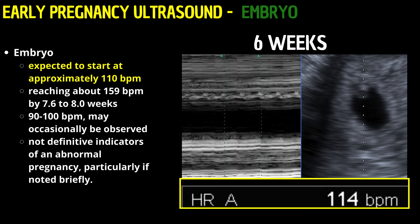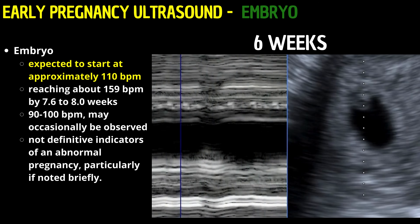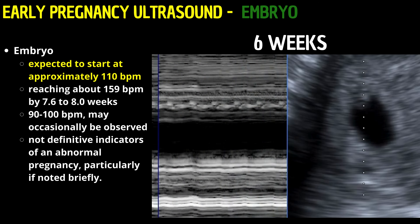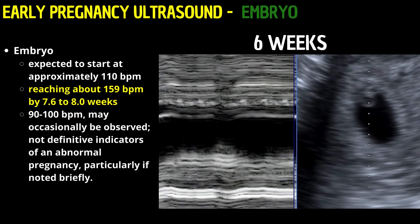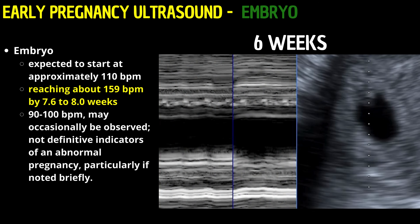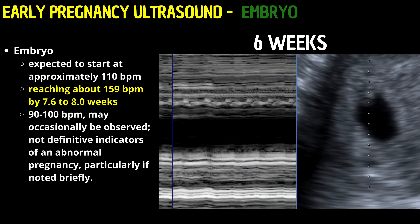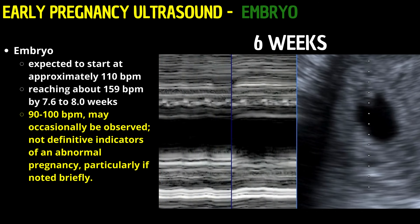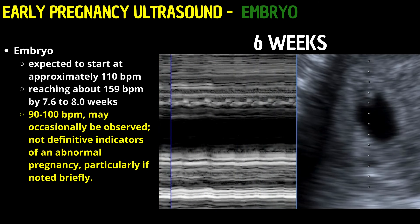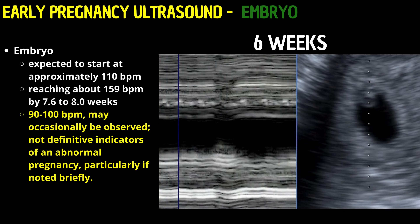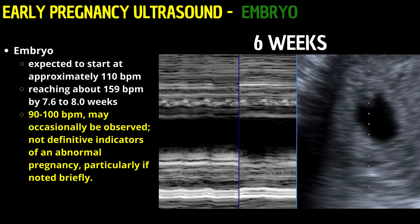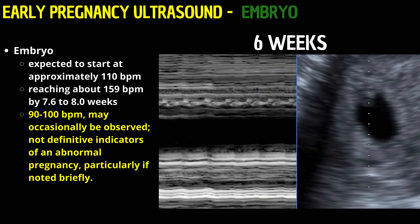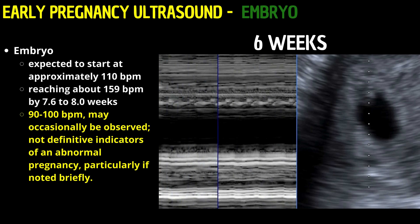This threshold underscores the importance of early cardiac activity as a prognostic indicator. A fetal heart rate is expected to start at approximately 110 BPM by 6.2 weeks, indicating a healthy progressing pregnancy, and is anticipated to increase progressively, reaching about 159 BPM by 7.6 to 8.0 weeks. Slightly lower fetal heart rates, such as 90 to 100 BPM, may occasionally be observed early in gestation. While these rates can be concerning and require close observation, they are not definitive indicators of an abnormal pregnancy, particularly if noted briefly.